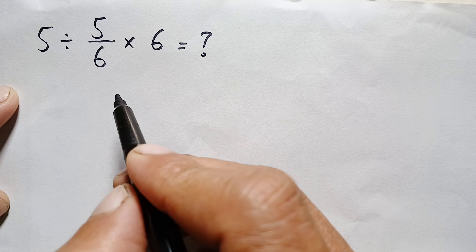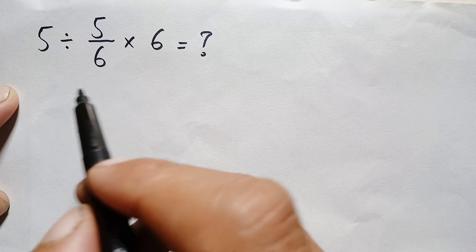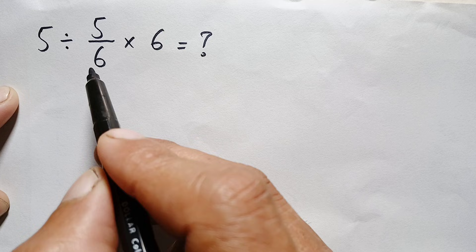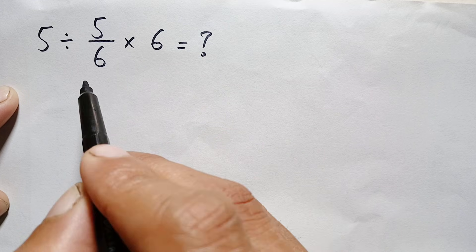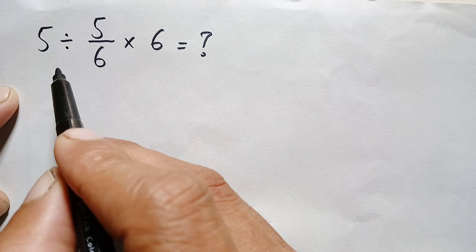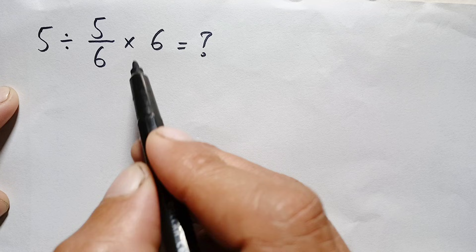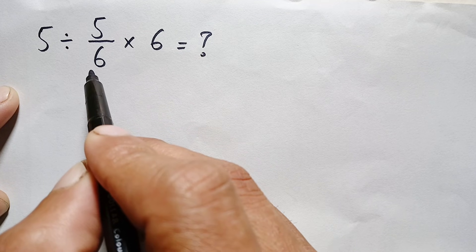Hello everyone, you are welcome. What is the correct answer of 5 divided by 5/6 times 6? Looking at the problem, we have two operations: division and multiplication. The multiplication is easy, so let's try this first.